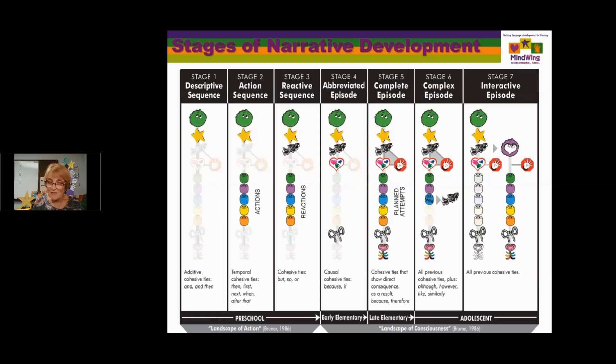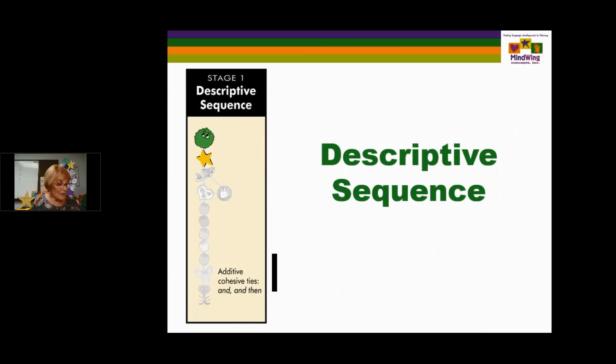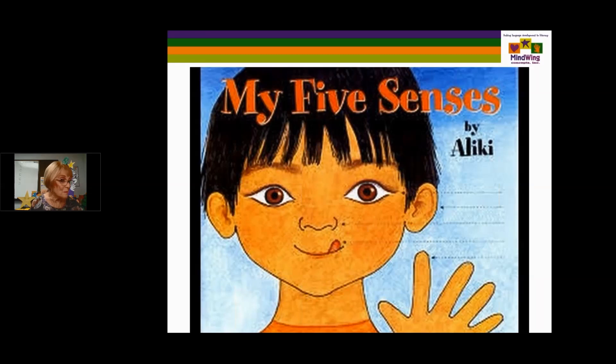From the inception of the Story Grammar Marker until now, we have all of these products that we've developed over time, focusing on changes in education, changes in special education, and particularly in the speech and language area. Stage one is the descriptive sequence — characters and settings. One of my favorites is Five Senses by Aliki. It's a staple because often in schools, the five senses will be used to describe the character and what the character sees, hears, and touches in the setting.